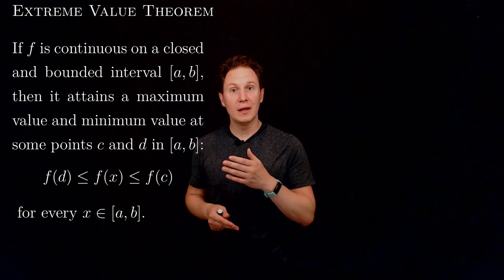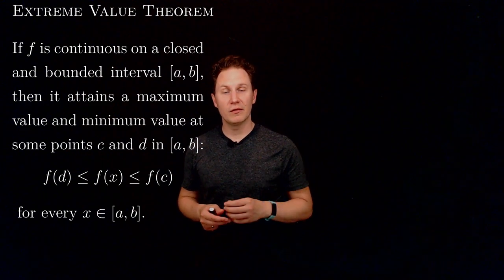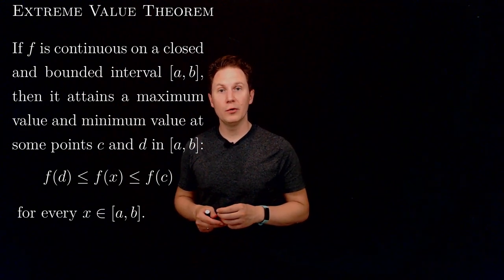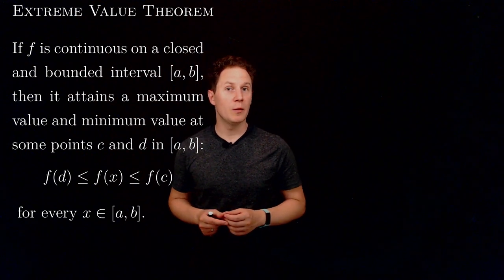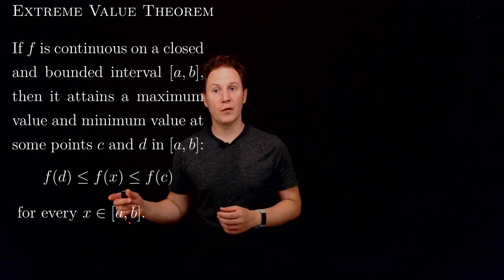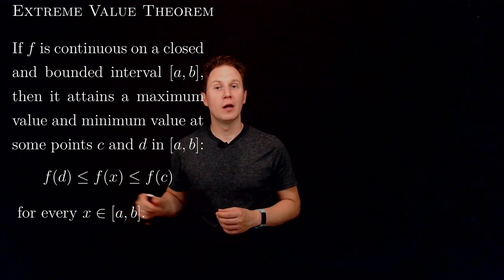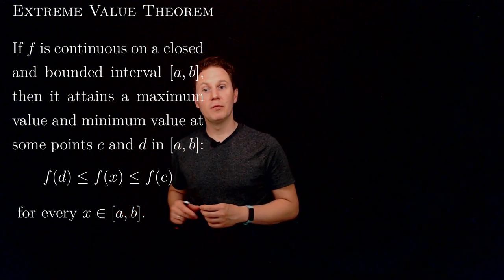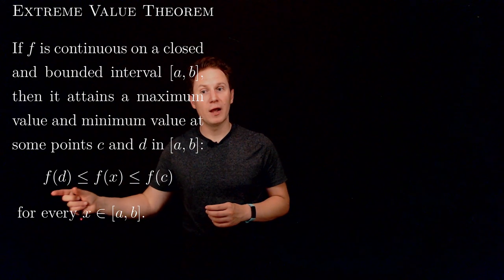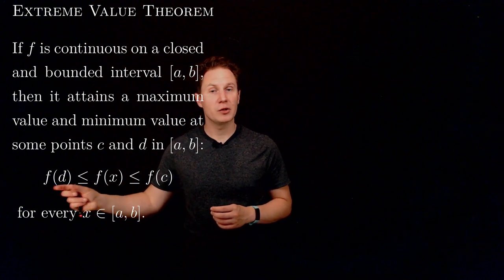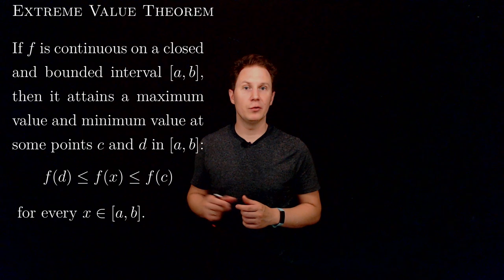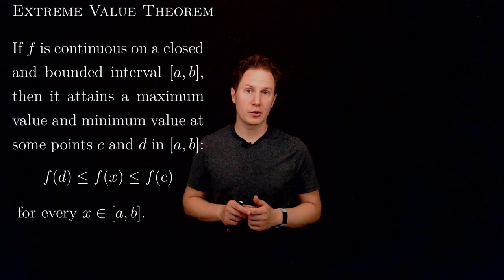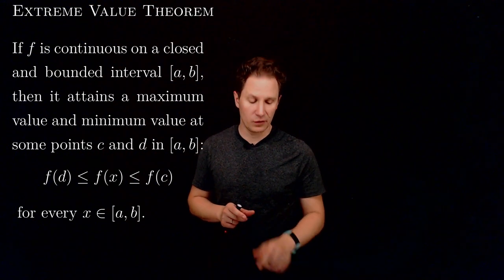Attaining a maximum and minimum value means that for every x between a and b, the values of the function f(x) will be between a minimum value taken on by the function at d and a maximum value taken on by the function at c.